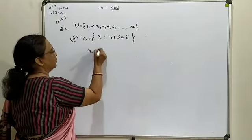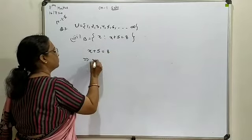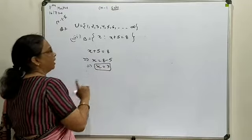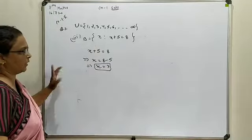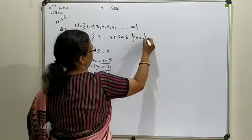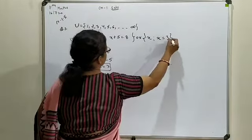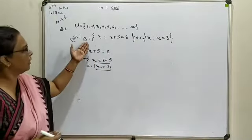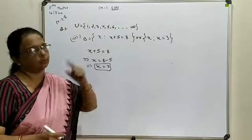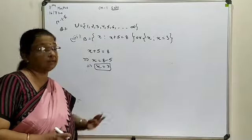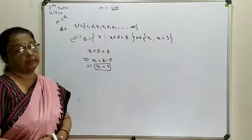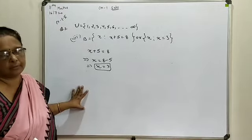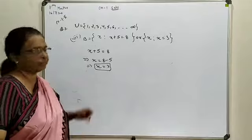First, solve for x: x + 5 = 8 gives x = 3. So the question can be expressed as B = {x : x = 3}. This is the shortest form. With respect to set B, you have only one element as a solution, meaning it contains only the element 3. So in its complement, the elements to include are those not equal to 3.